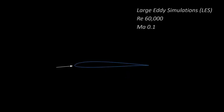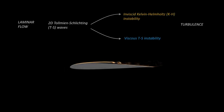The visualization is presented in airfoil reference coordinates. As the airfoil pitches up, 2D Tollmien-Schlichting or TS waves develop in the laminar flow near the leading edge. Flow separates from the surface, forming a shear layer akin to a free shear layer in that it has an inflectional velocity profile that undergoes a Kelvin-Helmholtz type instability.